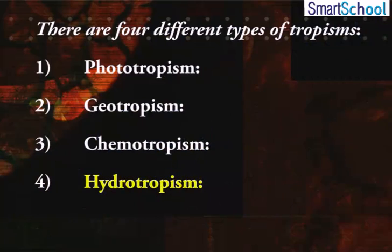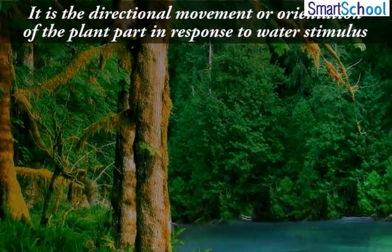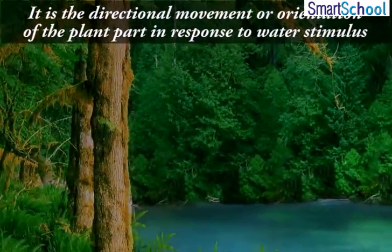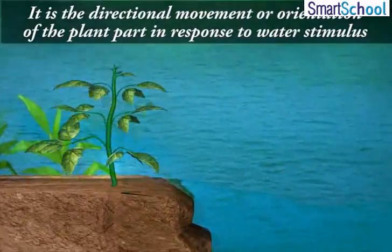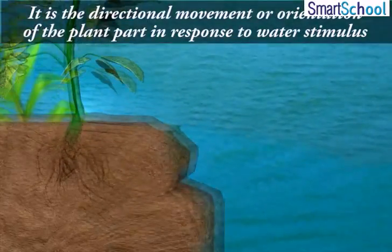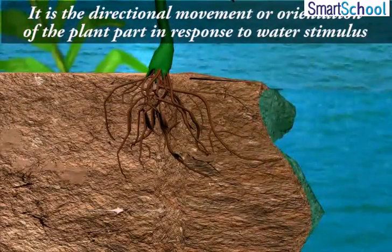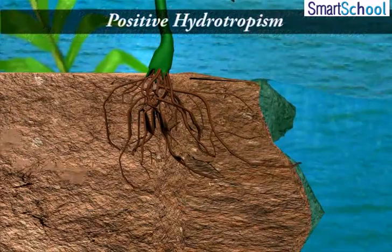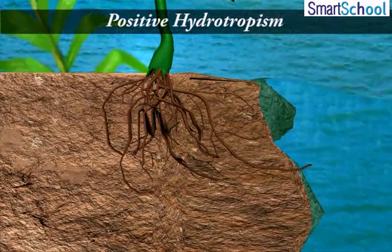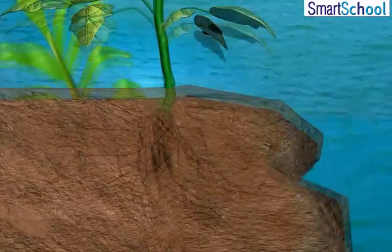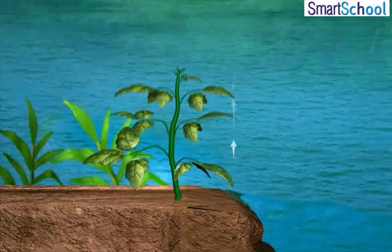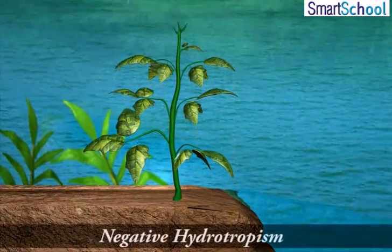4. Hydrotropism: It is the directional movement or orientation of the plant's part in response to water stimulus. If the plant's part moves towards the water stimulus, it is called positive hydrotropism. On the other hand, if the plant's part moves away from the water stimulus, it is called negative hydrotropism.